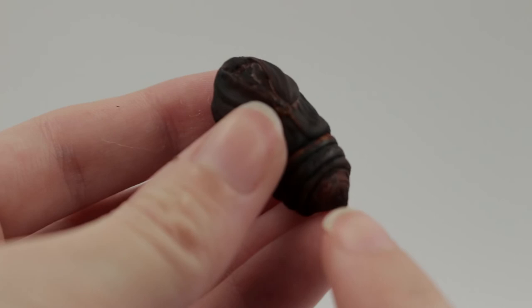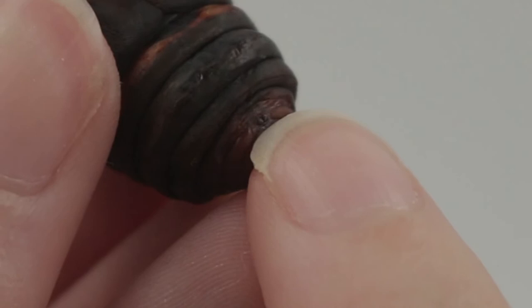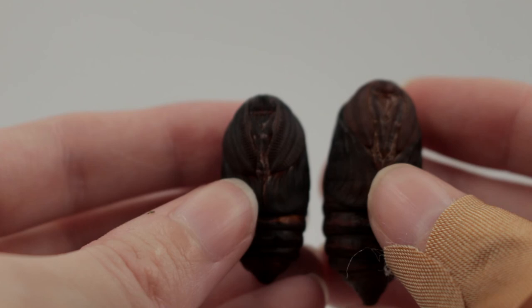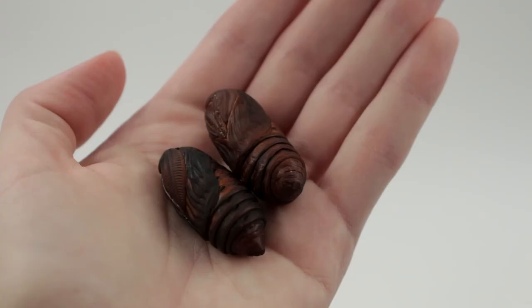Whereas the male here, you can see he doesn't really have that. He just has these two tiny little notches right there where my fingernail is. And again, those become his claspers, the part of the male that holds on to the female.